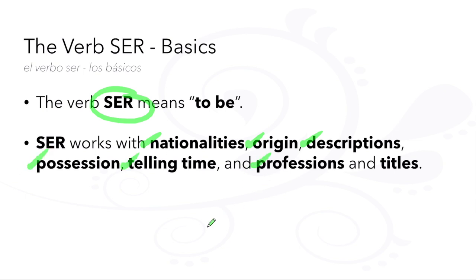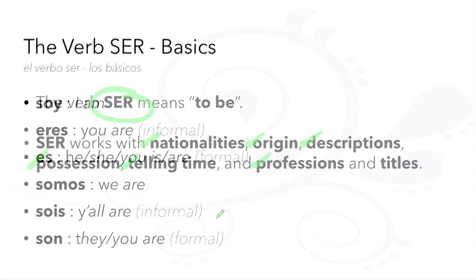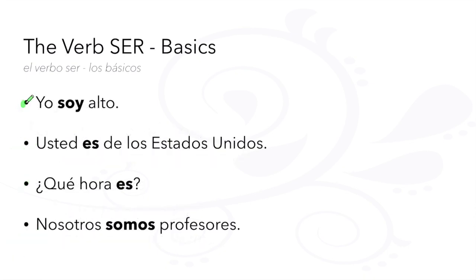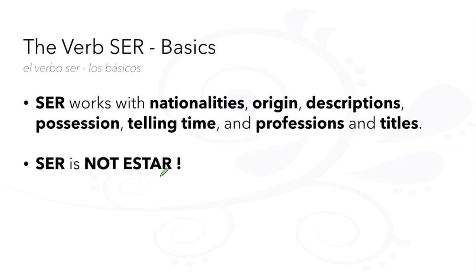The conjugations are: yo soy, tú eres, él/ella/usted es, nosotros somos, vosotros sois, ellos/ellas/ustedes son. For example: 'yo soy alto,' 'usted es de los Estados Unidos,' '¿qué hora es?,' 'nosotros somos profesores.' Don't forget that 'ser' and 'estar' both mean 'to be' but are used with very different functions.